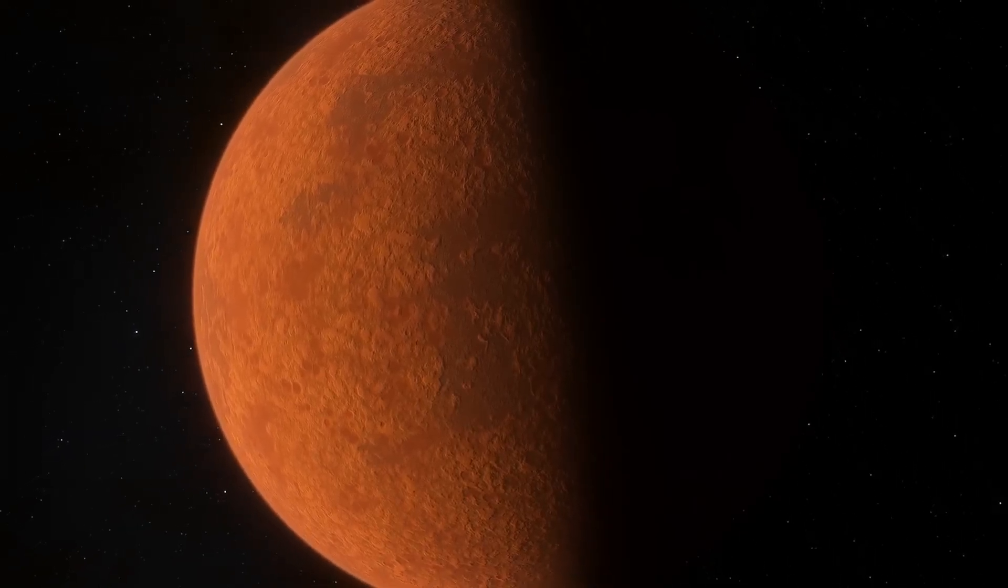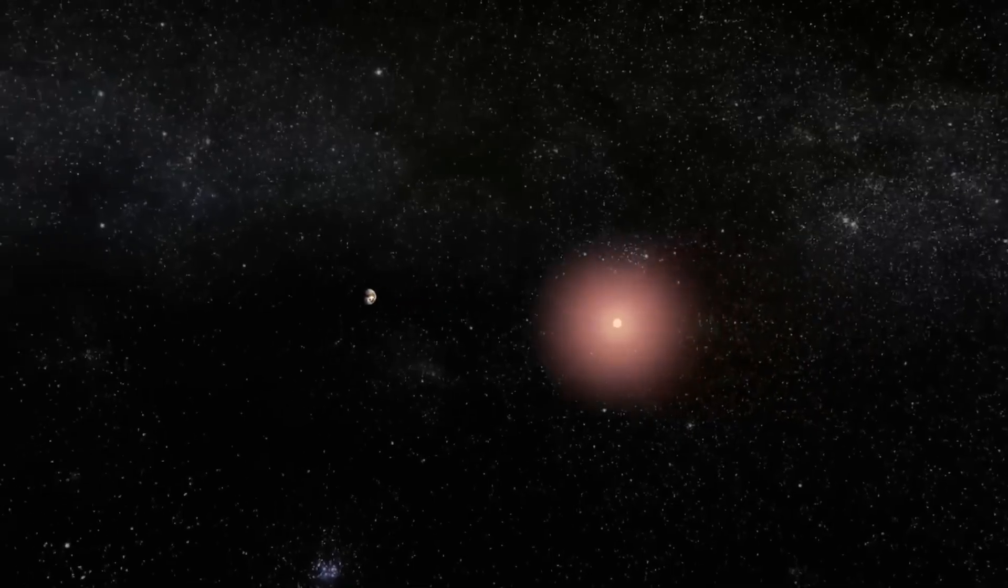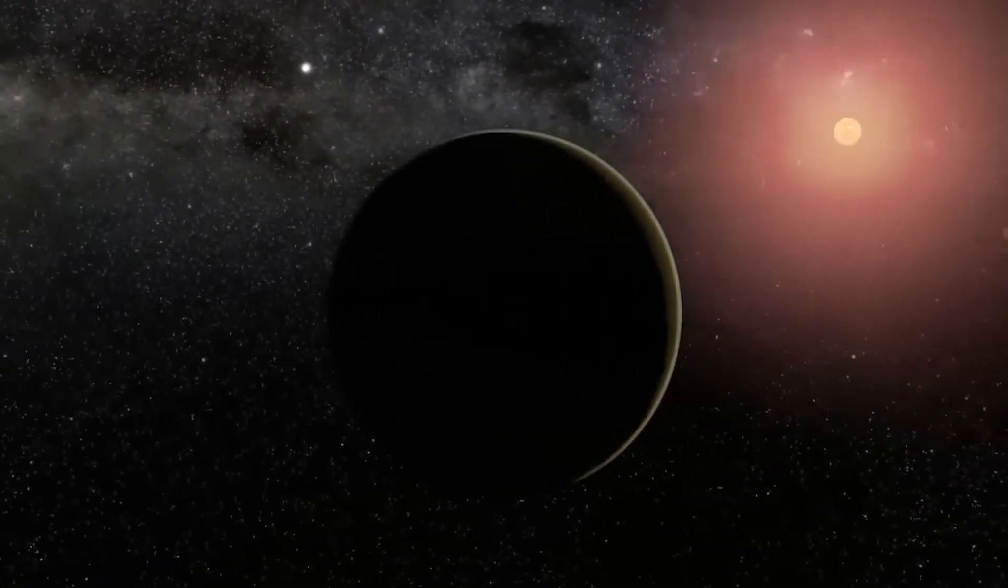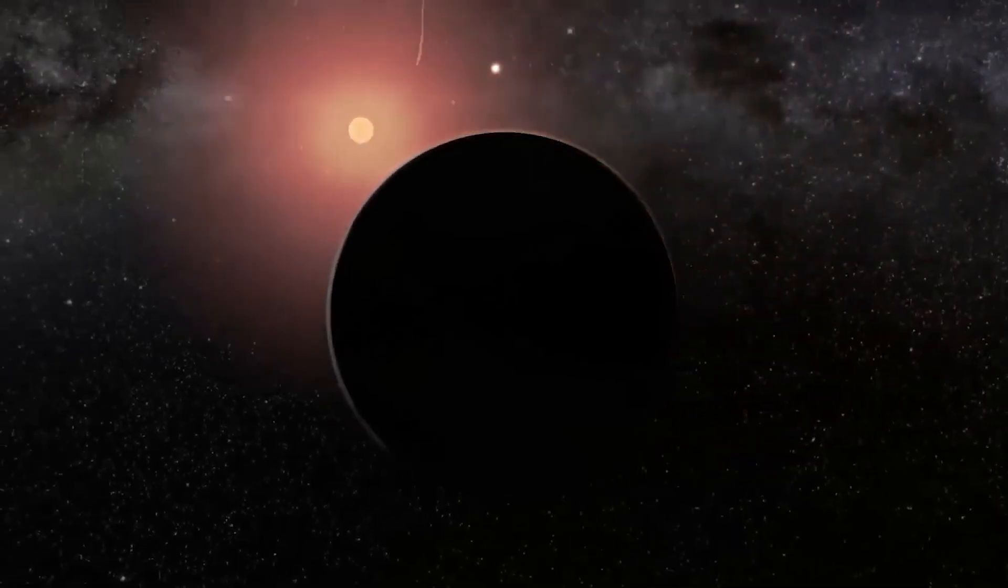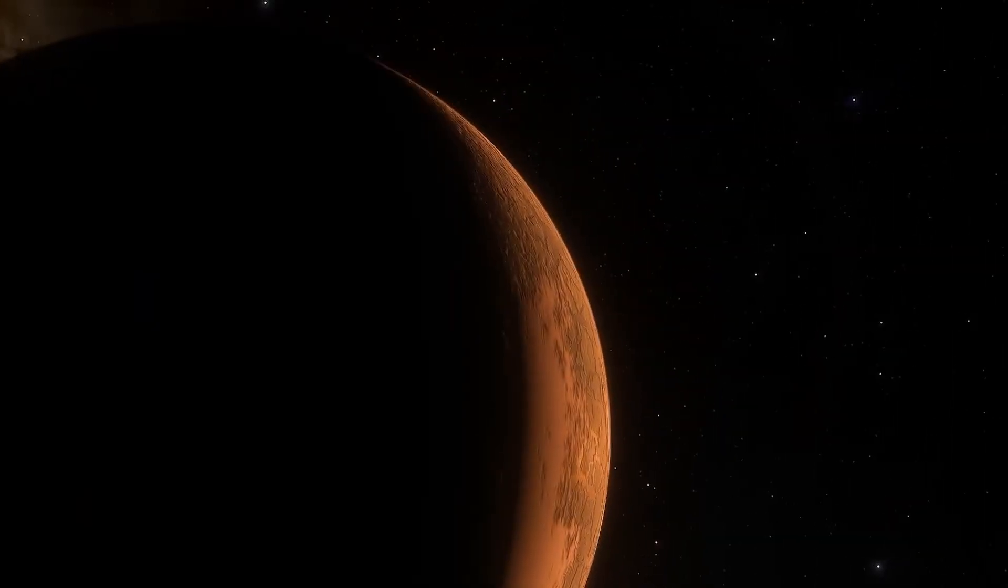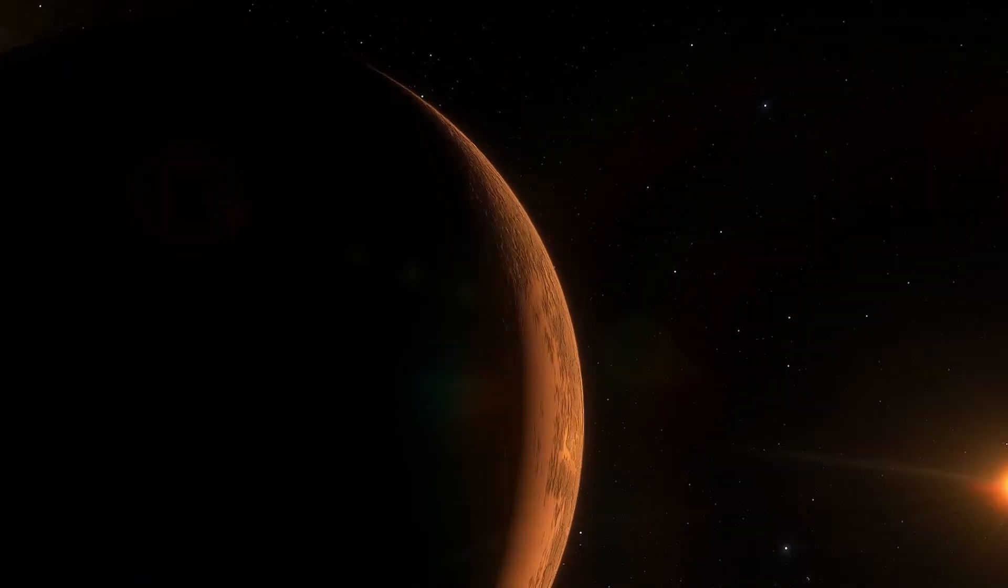Proxima b, orbiting the closest star to our solar system, has long captured the imagination of scientists and dreamers alike. But while its illuminated side has been a topic of intense study, its dark side, permanently locked in shadow, remained an enigma.